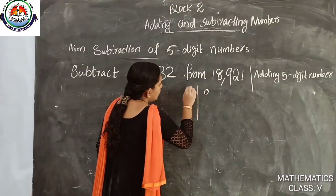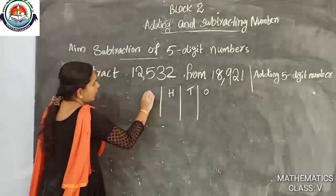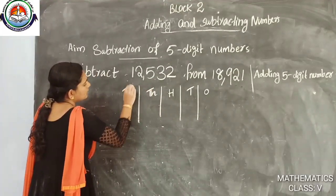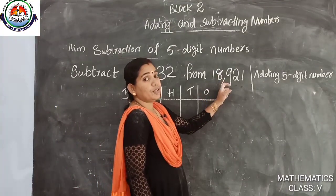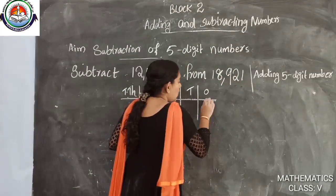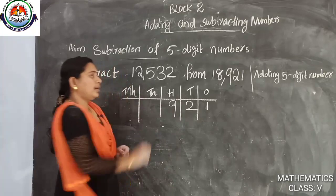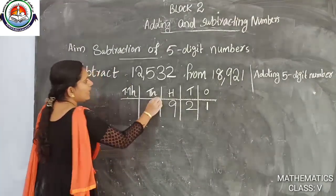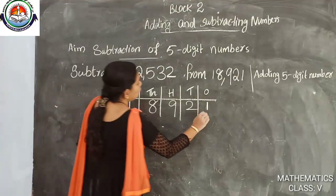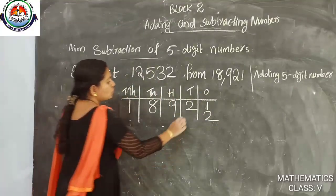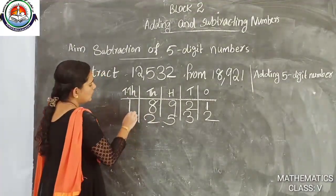In the place value chart: the first number 18,921 has 1 in ones, 2 in tens, 9 in hundreds, 8 in thousands, and 1 in ten-thousands. The second number 12,532 has 2 in ones, 3 in tens, 5 in hundreds, 2 in thousands, and 1 in ten-thousands.